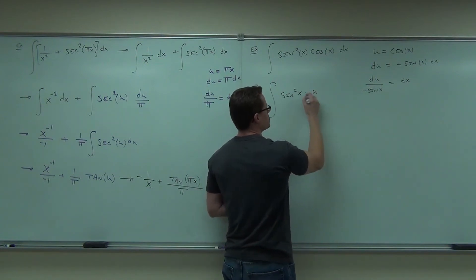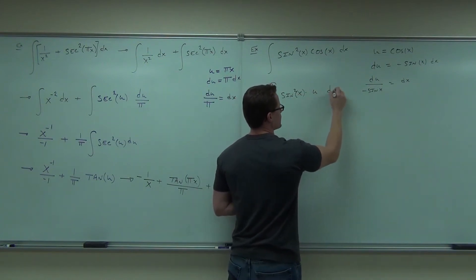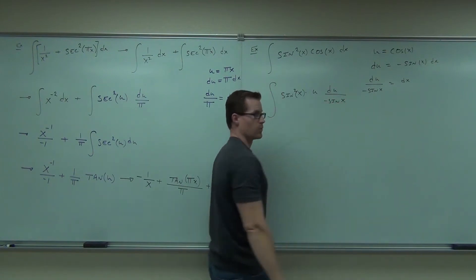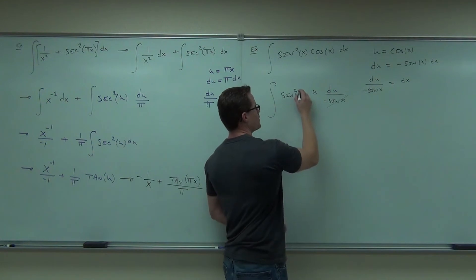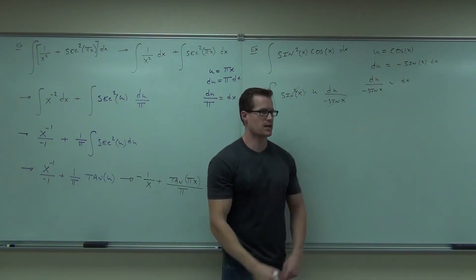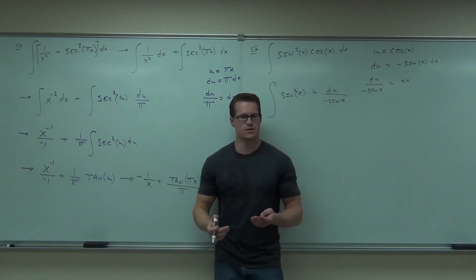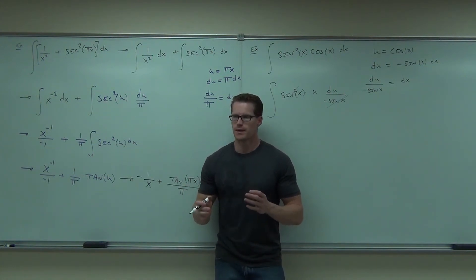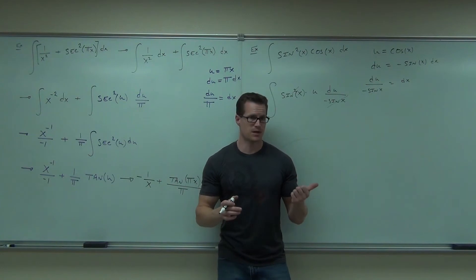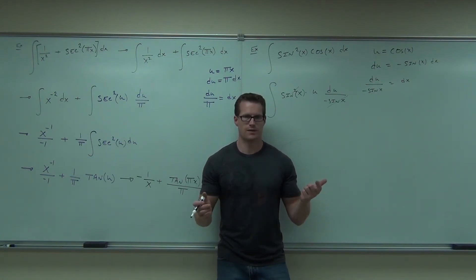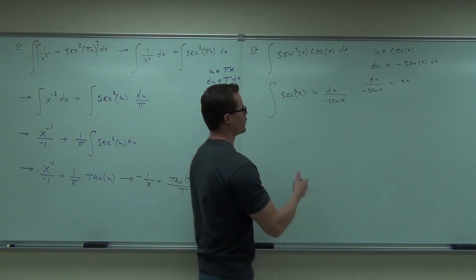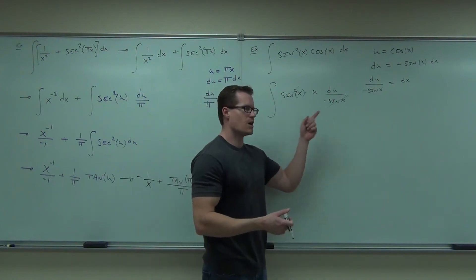And dx is du over negative sine x. One thing that's great is that cosine is gone, but only one of those is gone. Did I get rid of all the x's? No. There's nothing else you can do there. If it didn't work out nicely, either there's another substitution to make, or you made the wrong substitution — and most of the time in this class, that's what happens. So we go: this didn't work, I better not try to force this through.